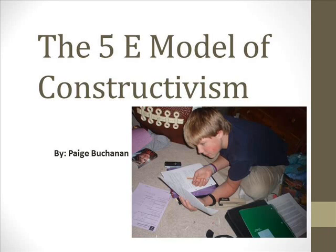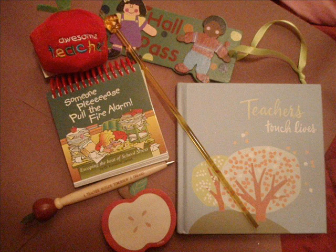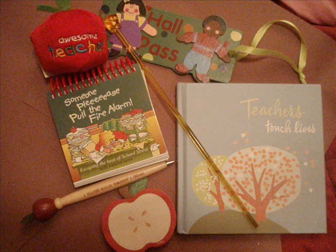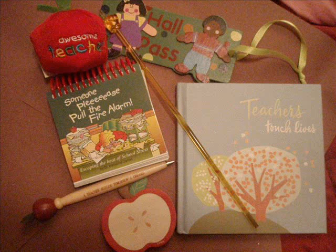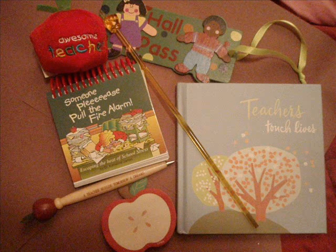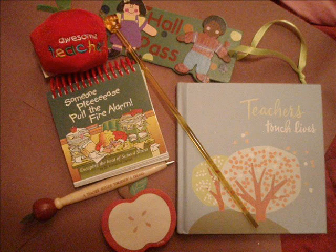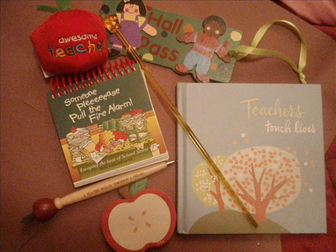The 5E Model of Constructivism by Paige Buchanan. Teachers want their lessons to be successful. They want their students to learn, comprehend, and succeed. The 5E Model of Constructivism is a five-step outline on how to write a successful lesson. It shows how a lesson should interest the students and keep them learning. It is a great way to break down a lesson so that it is easy to construct, and also a good way to involve the students.